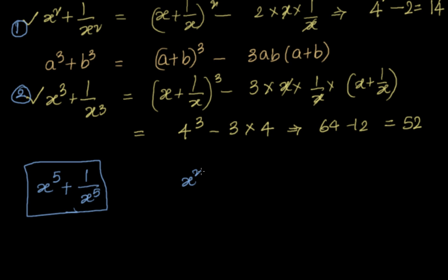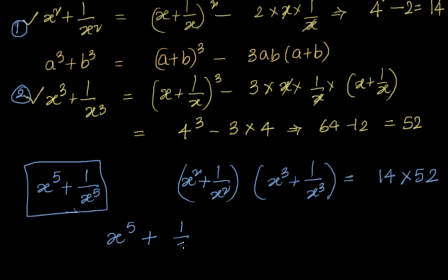We write down x square plus 1 by x square multiply with x cube plus 1 by x cube. We know their values, 14 and 52. Let's expand the left hand side. x square into x cube is x power 5, x square into 1 by x cube is 1 by x, plus 1 by x square into x cube is x, plus 1 by x power 5 is equal to 728.